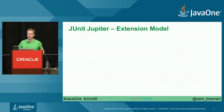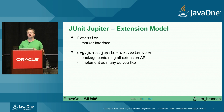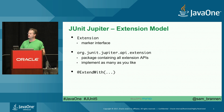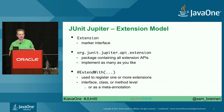Now jumping into JUnit Jupiter. The extension model: we have an Extension marker interface — org.junit.jupiter.api.extension. Packages are different from JUnit 4, so there are no conflicts. You can implement as many as you like — unlike JUnit 4 where you couldn't combine runners or have both class-level and method-level rules. Instead of @RunWith in JUnit 4, you use @ExtendWith, specifying one or more extensions at class level, method level, or even on interfaces. JUnit 5 also supports meta-annotations like Spring does.